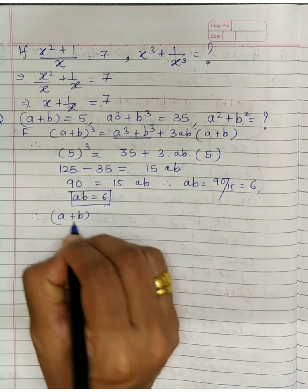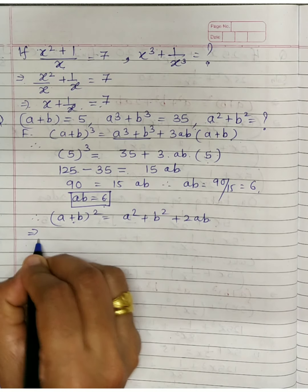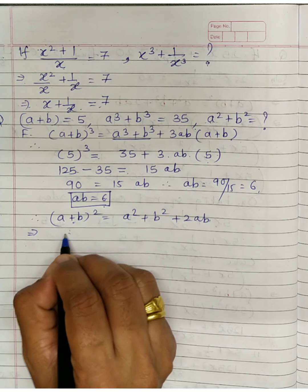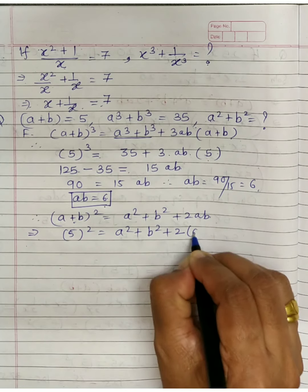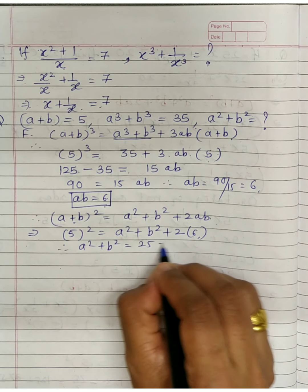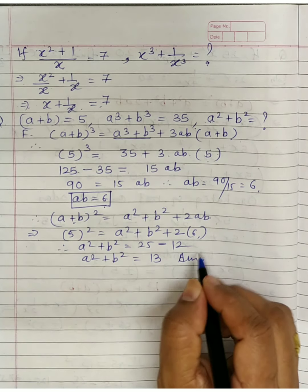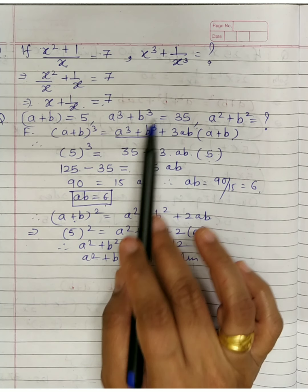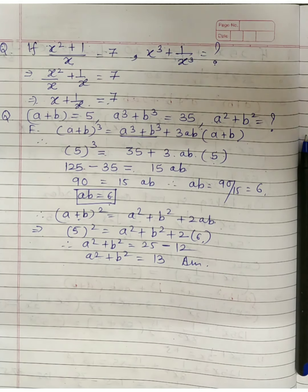Now we know ab = 6. To find a² + b², use (a + b)² = a² + b² + 2ab. Substitute the known values: 25 = a² + b² + 12, giving a² + b² = 13. Make sure to write down all steps when solving yourself.